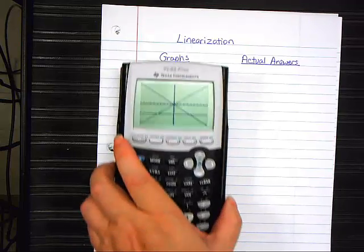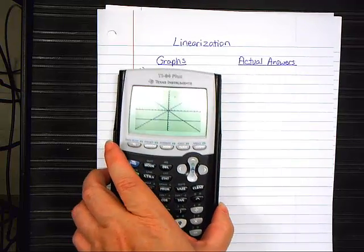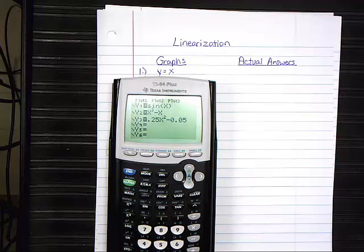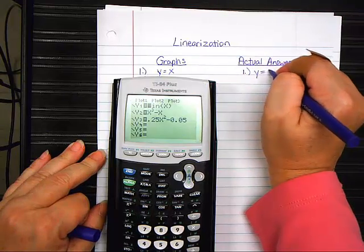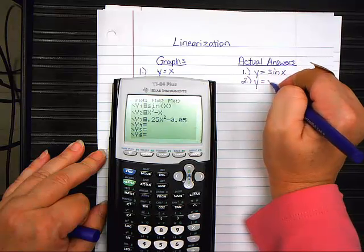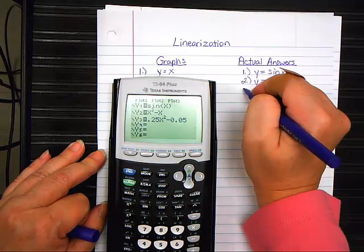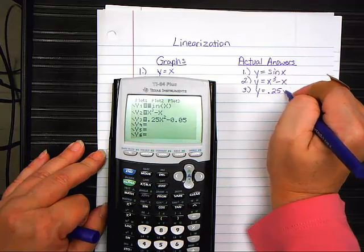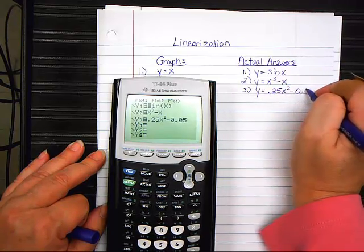Here are the actual answers. Let me put this so you can see it. Copy those down. Number 1, Y equals sine of X. Write that on your paper. Number 2, Y equals X cubed minus X. And number 3, Y equals 0.25X squared minus 0.05.